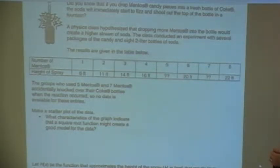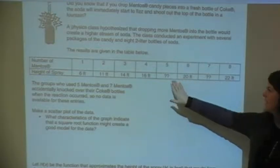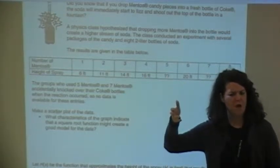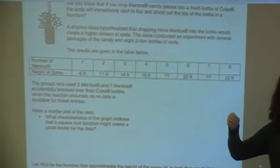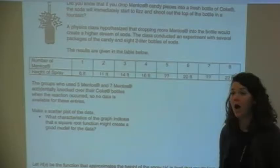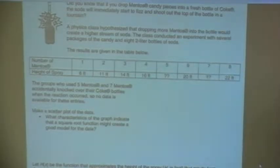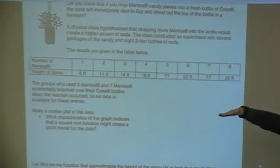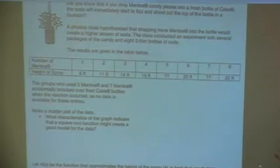So the first thing it says is make a scatter plot. We're going to make a scatter plot on our calculator. Before I do that though, let me just say, if you'll notice all of the heights happen to be exact numbers. What is the likelihood that when they dropped that Mentos it went exactly six feet? Probably not. They probably were told by their teacher to just round it, or they were eyeballing anyway to not be close to it.